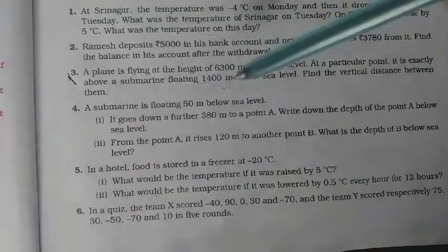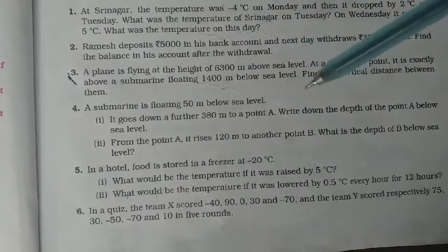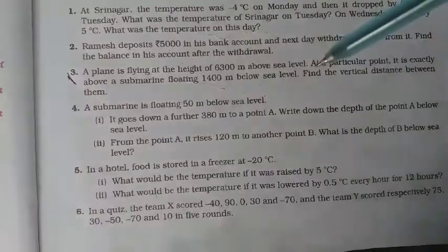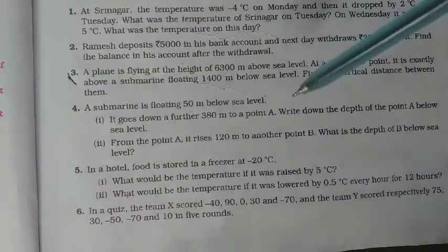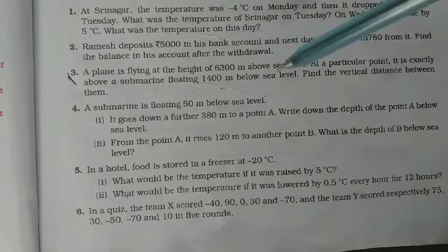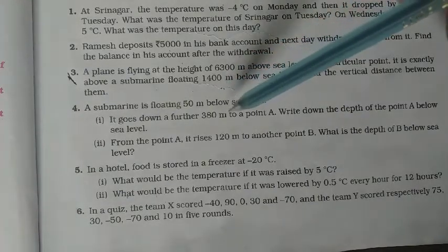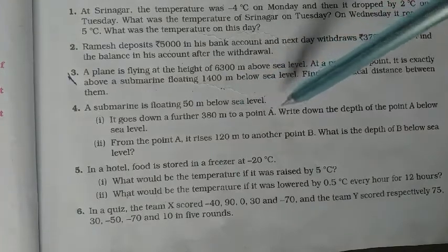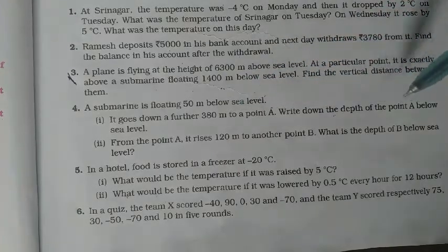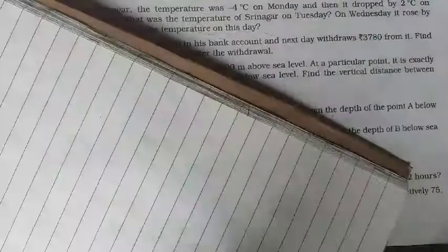A submarine is floating 50 meters below sea level. It goes down a further 380 meters to point A. Write down the depth of point A below the sea level. What do we have to do? Let's see.